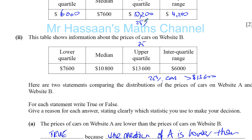For website A, twenty-five percent of cars have a price greater than ten thousand two hundred — that's the upper quartile of A. So of course, the percentage with prices greater than thirteen thousand six hundred will be less than twenty-five percent, because some of that twenty-five percent falls between ten thousand two hundred and thirteen thousand six hundred. That means the percentage above thirteen thousand six hundred on website A is less than on website B.